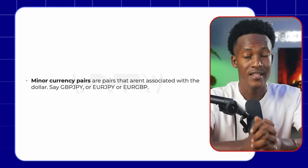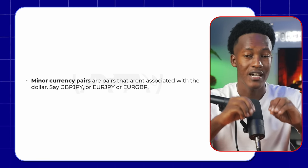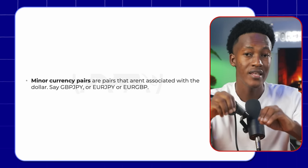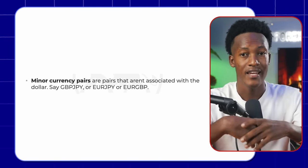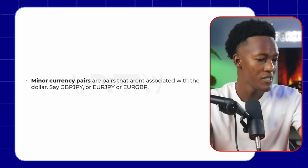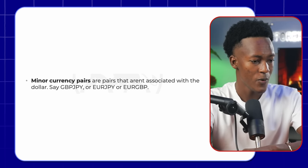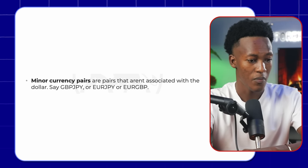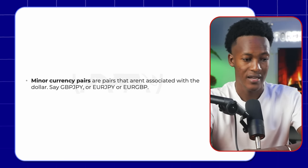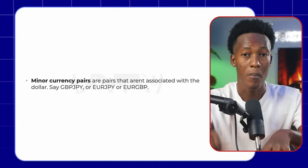The other type is minor currency pairs — pairs not associated with the dollar. Examples include EuroGBP, GBPJPY, or EuroJPY. And then lastly, exotic pairs, which are just from emerging markets. That's what you have to know about currency pairs.